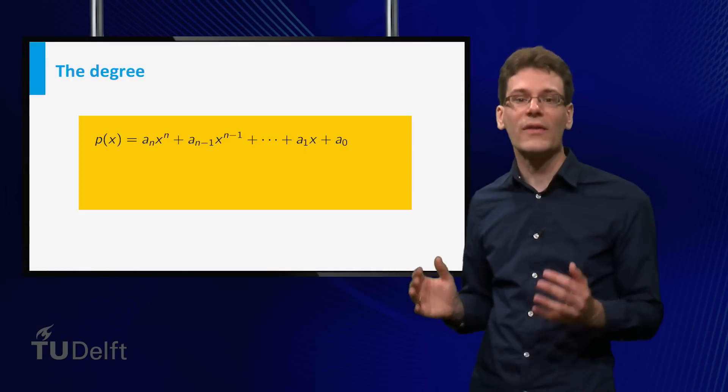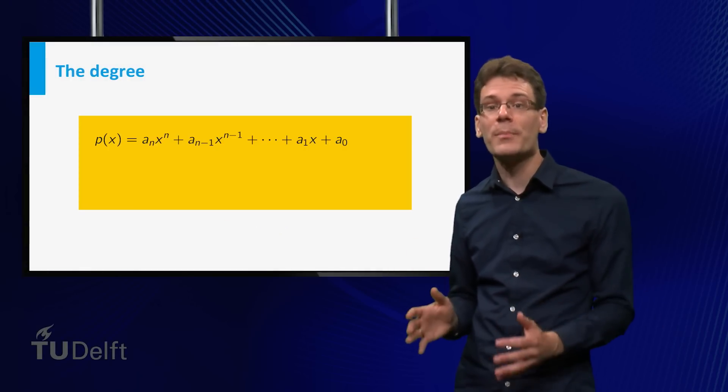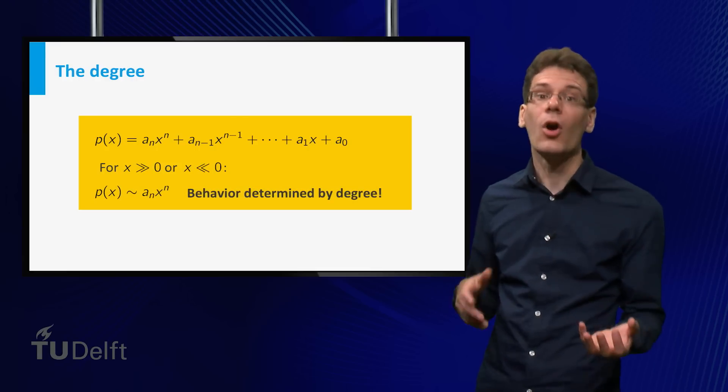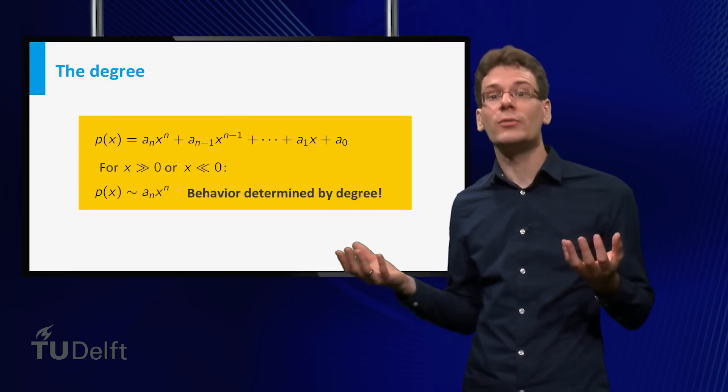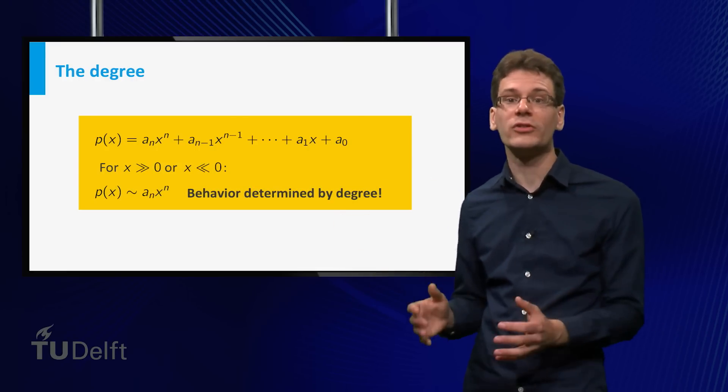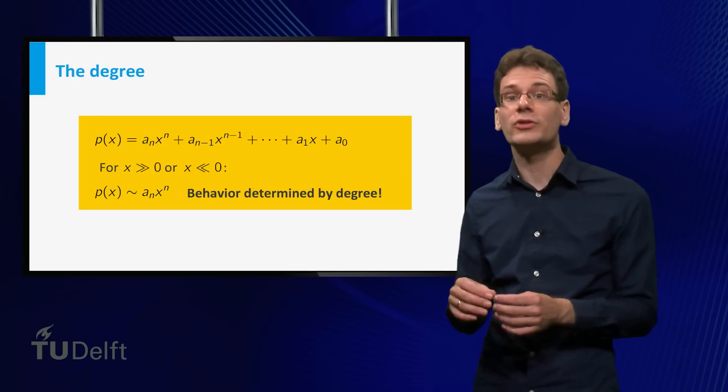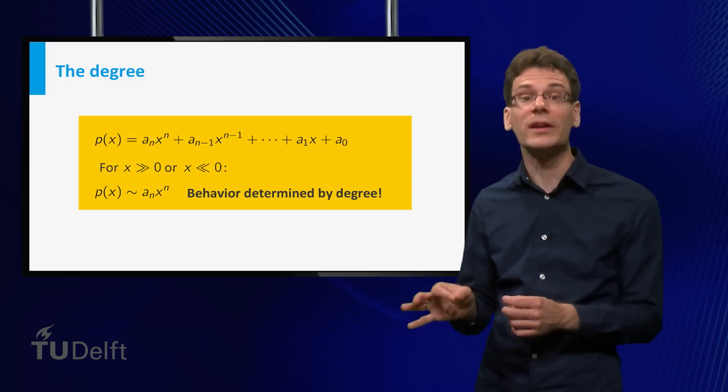In general, we have the following. Given some polynomial function of degree n, then for x values much larger than zero or much smaller than zero, it will be roughly equal to the power function a_n times x to the power n. The exponent of this power function is precisely the degree of the polynomial.